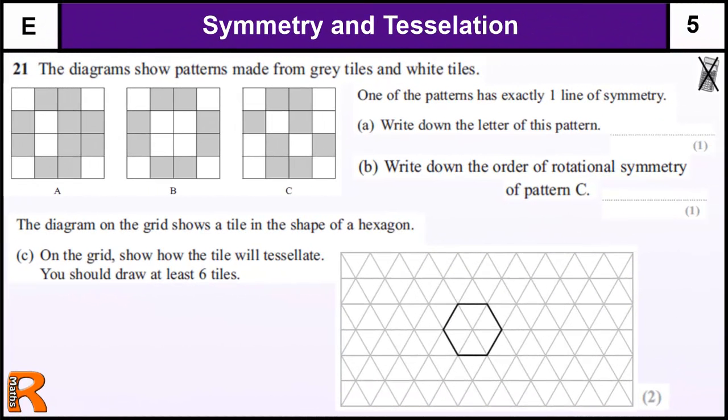Symmetry and tessellation, grade E, GCSE. Technically, line symmetry and rotational symmetry are only grade F even, but this is quite late on the exam paper, so I think they're making it slightly more complicated than just a basic question.